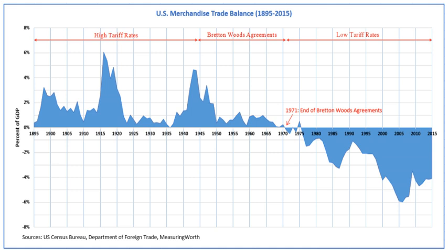This action, referred to as the Nixon shock, created the situation in which the U.S. dollar became a reserve currency used by many states. At the same time, many fixed currencies also became free-floating.